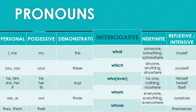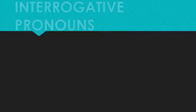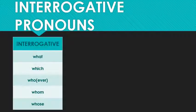You can see here we've got what, we've got who, and we've got a couple of others too. The first thing you're probably wondering is what's with all the who's? We've got who, whoever, whom, whomever, whose, and whosever. What do they all mean?